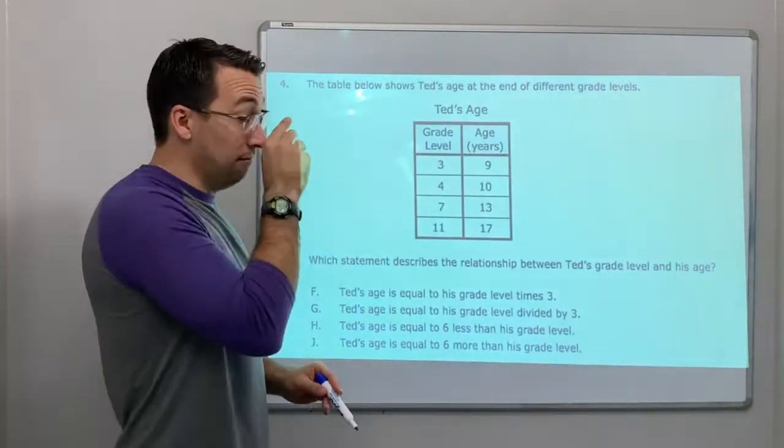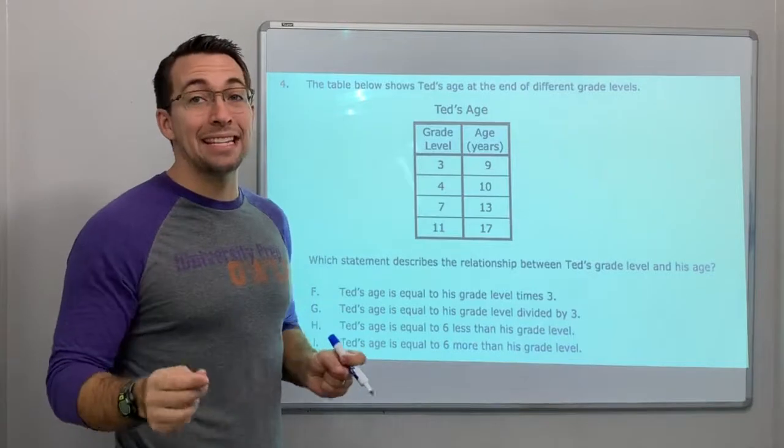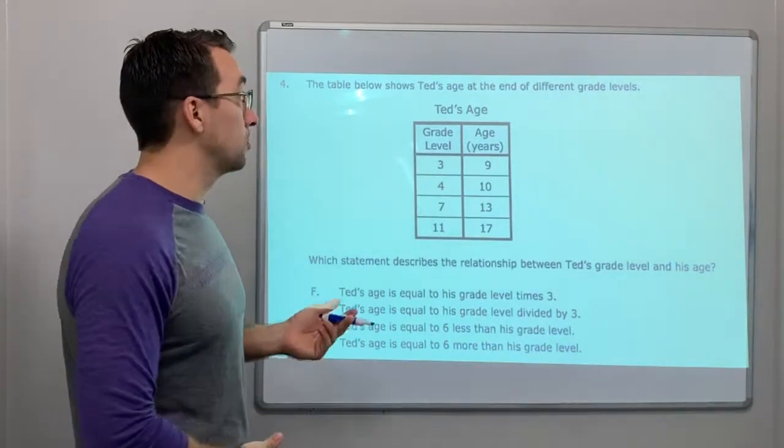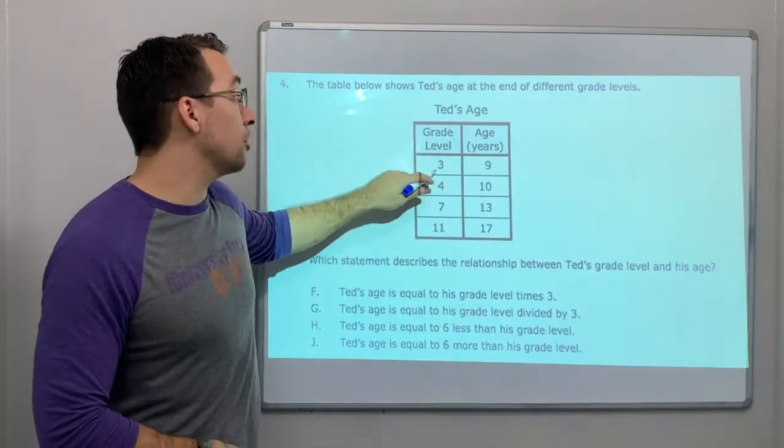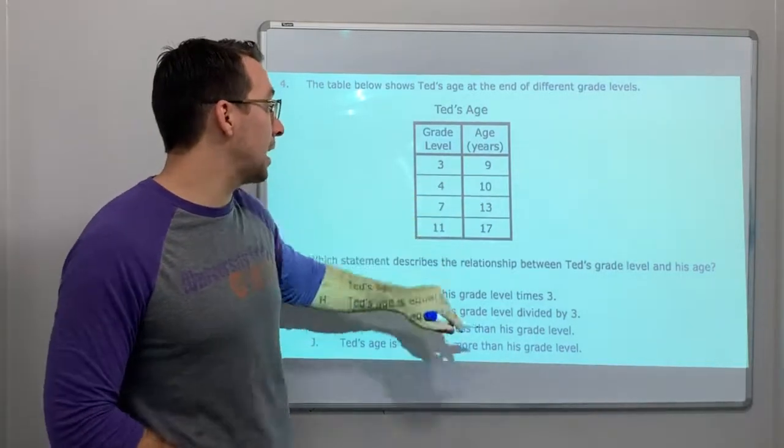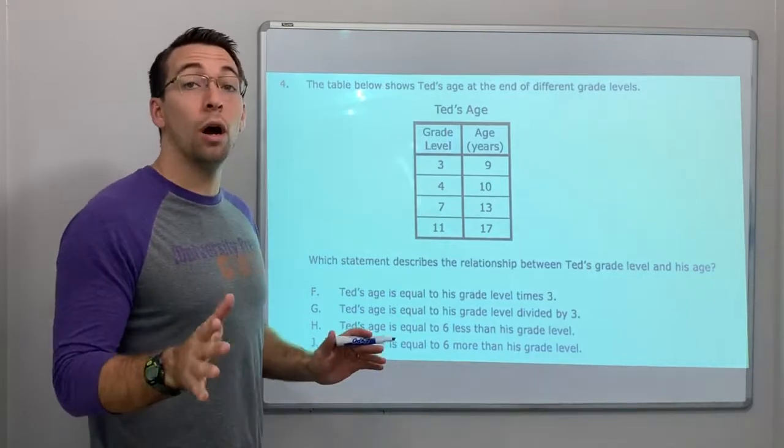The table below shows Ted's age at the end of different school levels. Third grade he's 9, fourth grade he's 10, seventh grade he's 13.